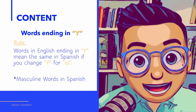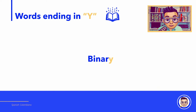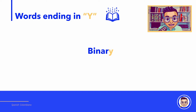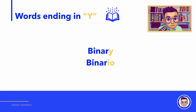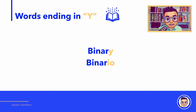Let's see an example. Binary — binary ends with Y, and if we change that Y for IO, binary becomes binario. So binary in Spanish is binario.